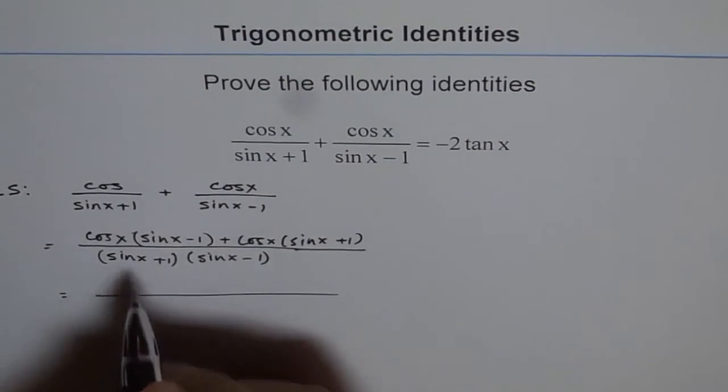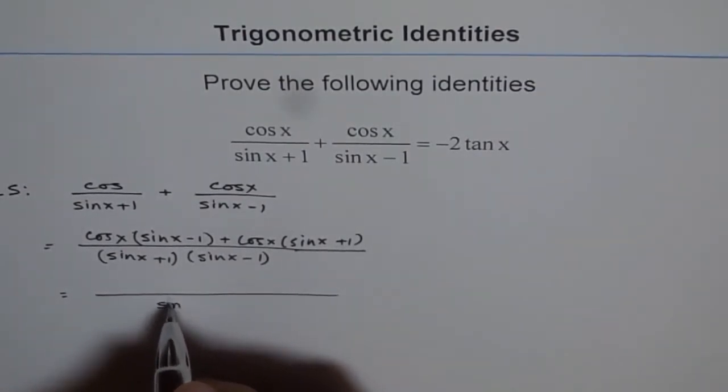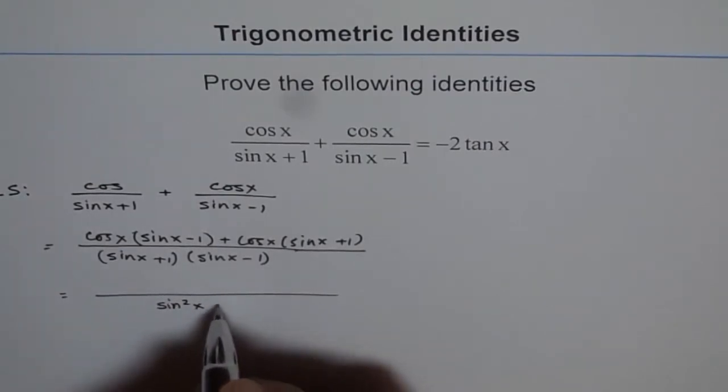In the denominator it is a plus b times a minus b, so we get sin squared x minus 1.